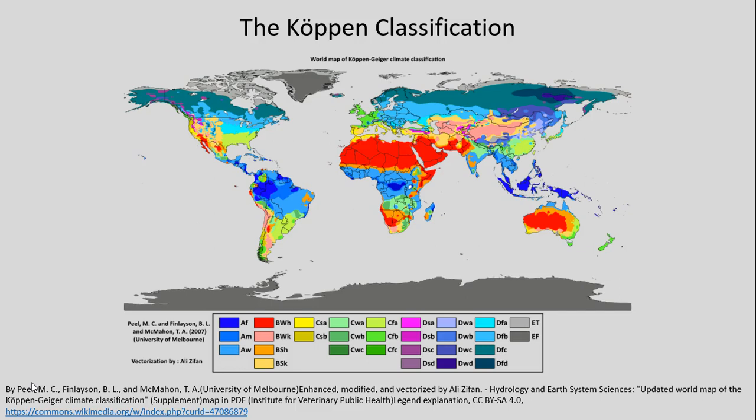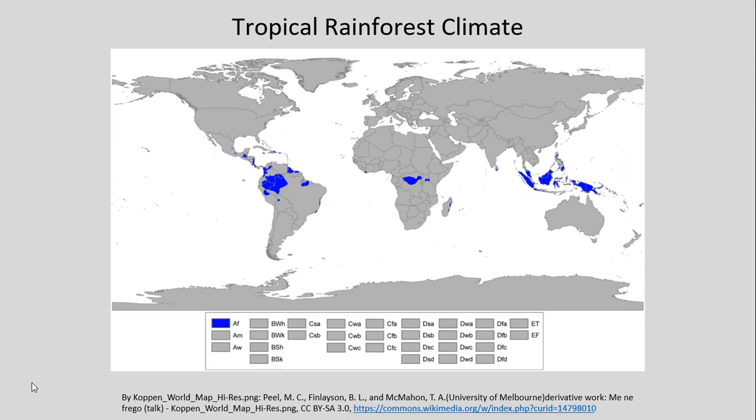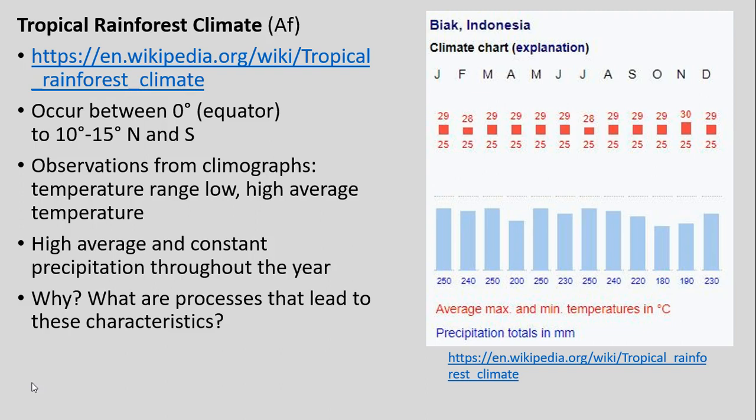Without further ado, we can look at our broad Köppen classification map. We'll start working through it from the tropics up to the poles. We can see our variety of tropical climate types, including specifically the tropical rainforest climate. These occur right around the equator, within about 10 to 15 degrees north or south. We'll be using climographs — climate graphs — on the right-hand side here.